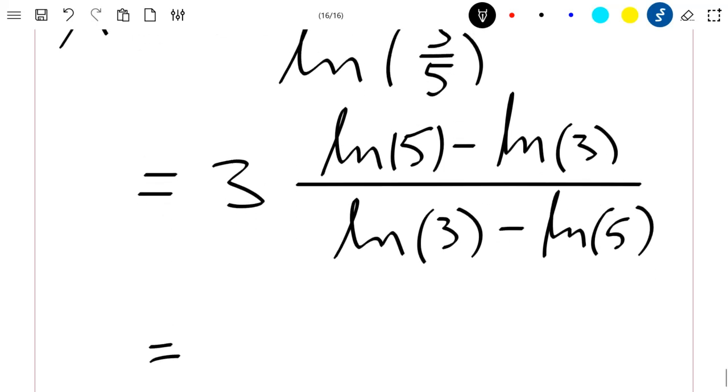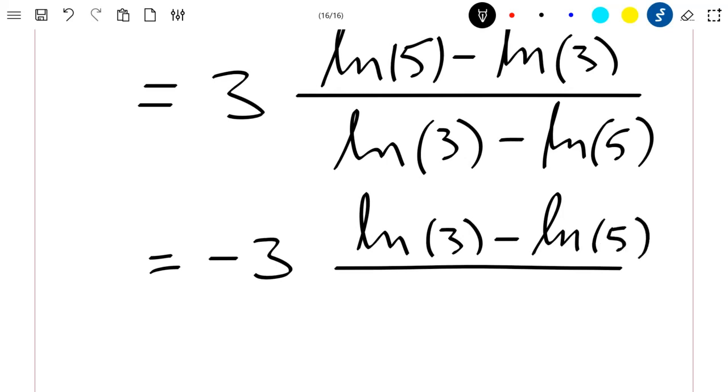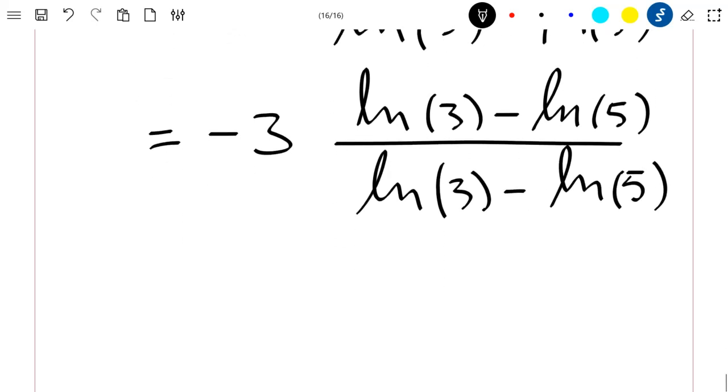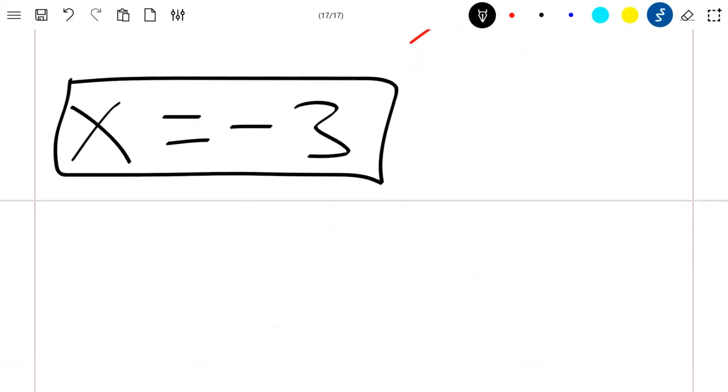I can see that if I pull minus outside here I will have minus 3, and here I have ln of 3 minus ln of 5 divided by ln of 3 minus ln of 5. I can simplify because I have the same term up and down, so I stay with my solution x equals minus 3. This is the solution to this equation.